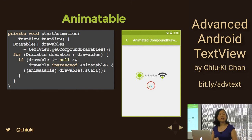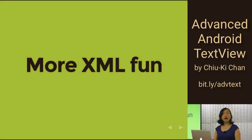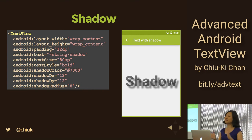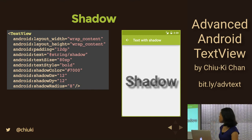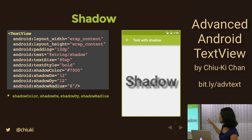Moving on to more XML fun — I showed you how to add images to your TextView. You can also specify a drop shadow. The parameters with the prefix 'shadow' are used for this. You can see it's offset to the right and bottom — that's shadow dx and dy. The shadow color is gray because I have black with an alpha of 0x77, so it's half transparent. The shadow radius controls the blur size.